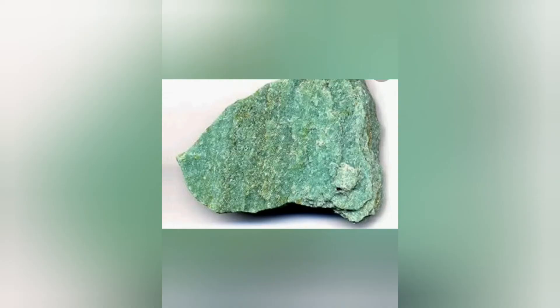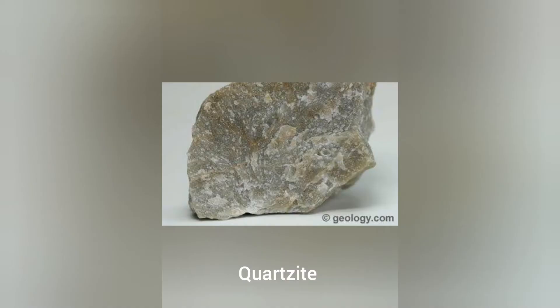The second example of metamorphic rock is quartzite. It is formed from sandstone, which is a sedimentary rock. Monuments like the Red Fort and Qutub Minar are made of quartzite. It is used to make jewelry, monuments, and statues. The colored stones you see in people's rings — yellow, blue — are examples of quartzite.